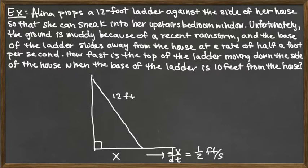Unfortunately the ground is muddy because of a recent rainstorm, and the base of the ladder slides away from the house. So we're talking about the base of the ladder here sliding this way. So we need some variables. Let's call the horizontal distance from the base of the house to the base of the ladder x, and with that notation, we can say dx/dt is equal to half a foot per second.